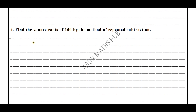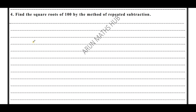Fourth question: find the square root of 100 by the method of repeated subtraction. You should find the square root of 100 by repeatedly subtracting successive odd numbers. From 100, subtract the odd numbers one by one. 100 minus 1 is 99. From 99, subtract the next odd number, which is 3.